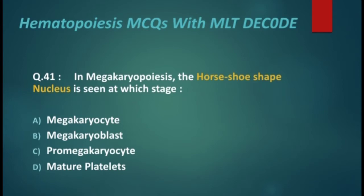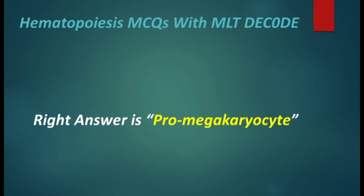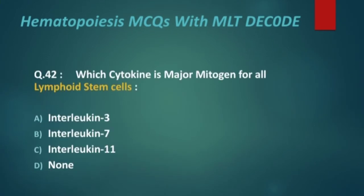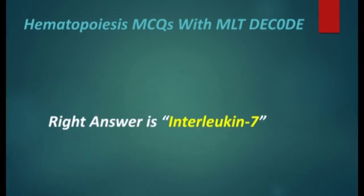The right answer is pro-megakaryocyte. Next, MCQ 42: Which cytokine is the major mitogen for all lymphoid stem cells? Options are: interleukin-3, interleukin-7, interleukin-11, and none.